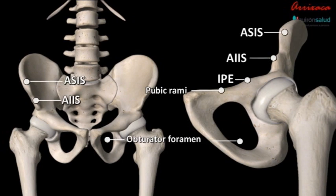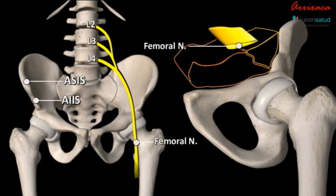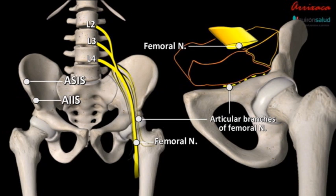Our bony references for the pain block are the anterior superior iliac spine, the anterior inferior iliac spine, the pubic ramus, and the iliopubic eminence. The femoral nerve arises from the dorsal divisions of the ventral rami of the second, third, and fourth lumbar nerves. Femoral articular branches separate from the main trunk of the nerve around the L5 level and dive deep into the iliacus muscle. These branches terminate at the anterior capsule of the hip after traveling over the pubic ramus while being covered by the psoas muscle.